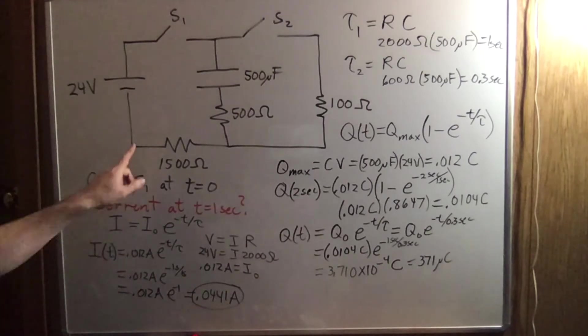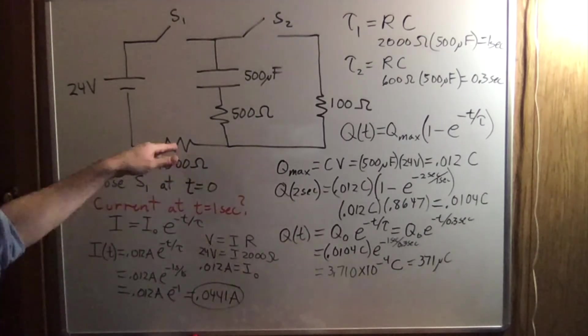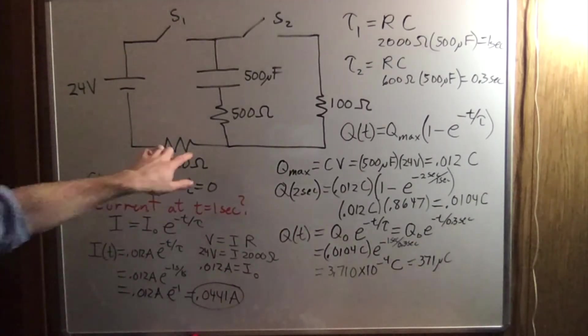Likewise, we could ask what's the voltage across the 1500 ohm resistor. And that would just be V equals IR. That would be the current times 1500 and it would be 6.62 volts.